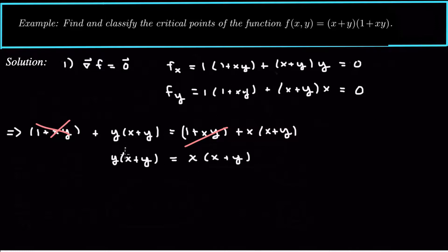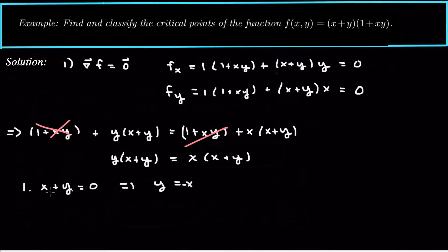Now there are two possibilities here. We could cancel the x plus y term in parentheses, but that only works if that term is not zero. So the first possibility is x plus y equals zero, which means y equals negative x. If it's not zero, then we can cancel it, and the second possibility is y equals x.